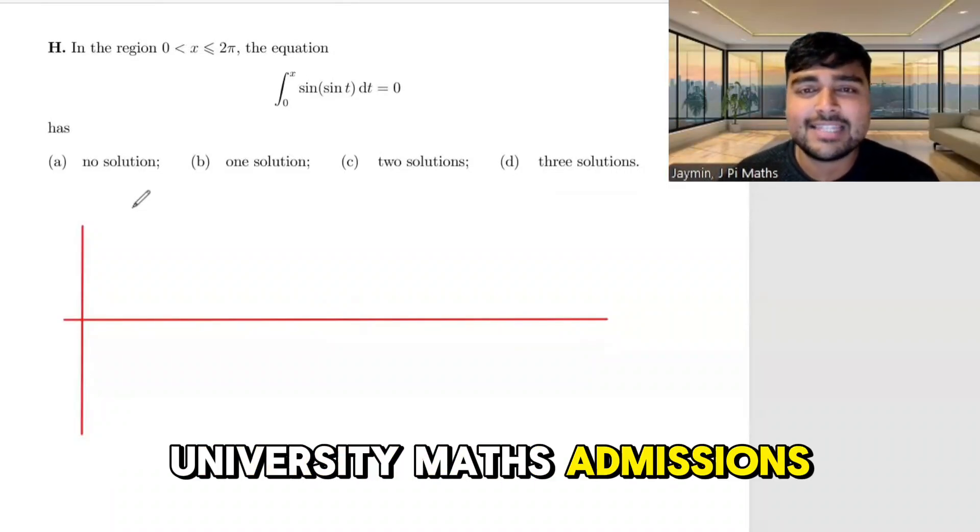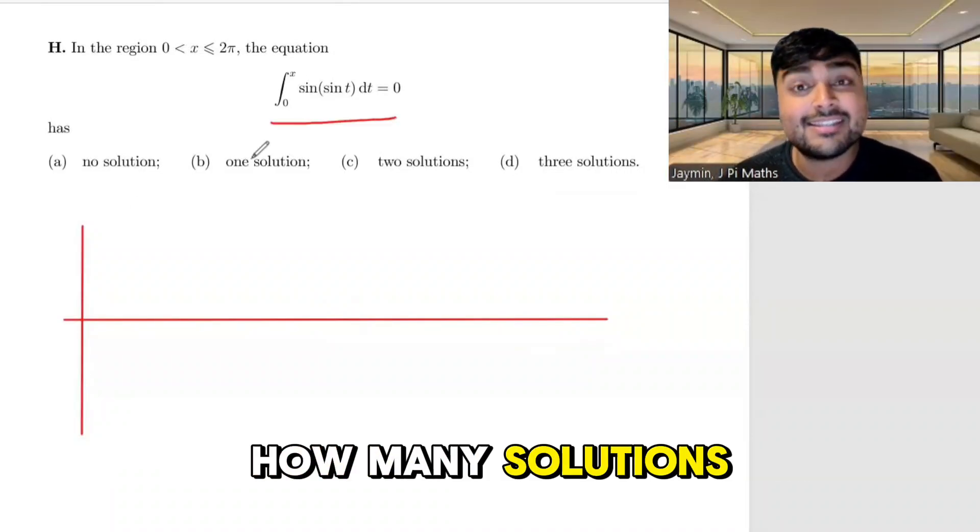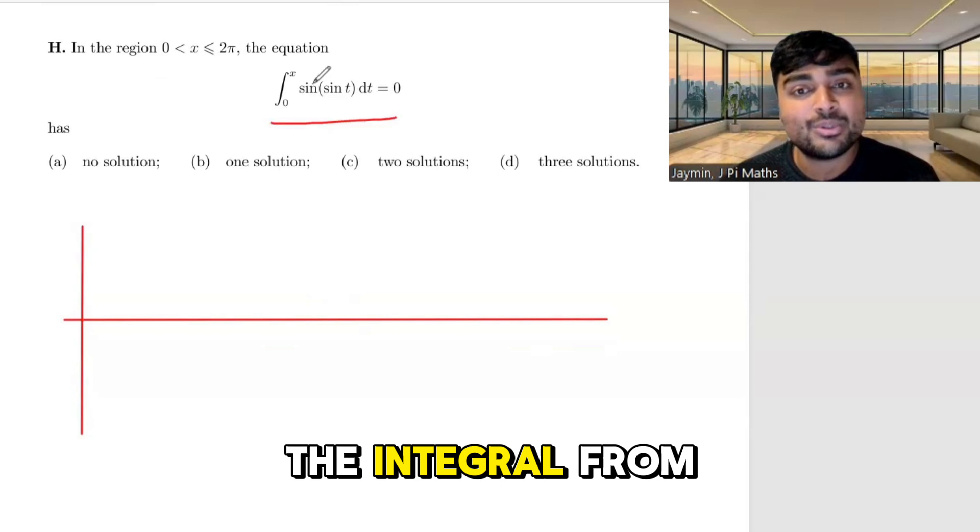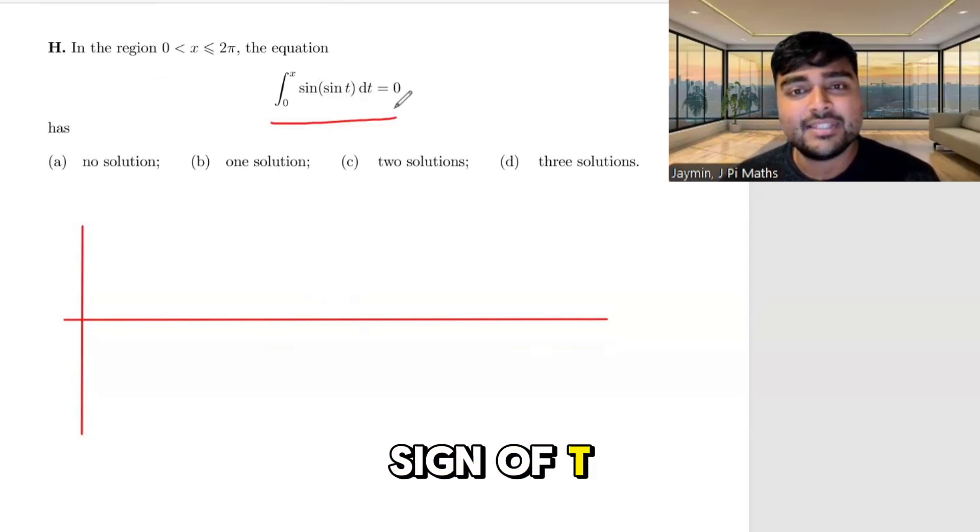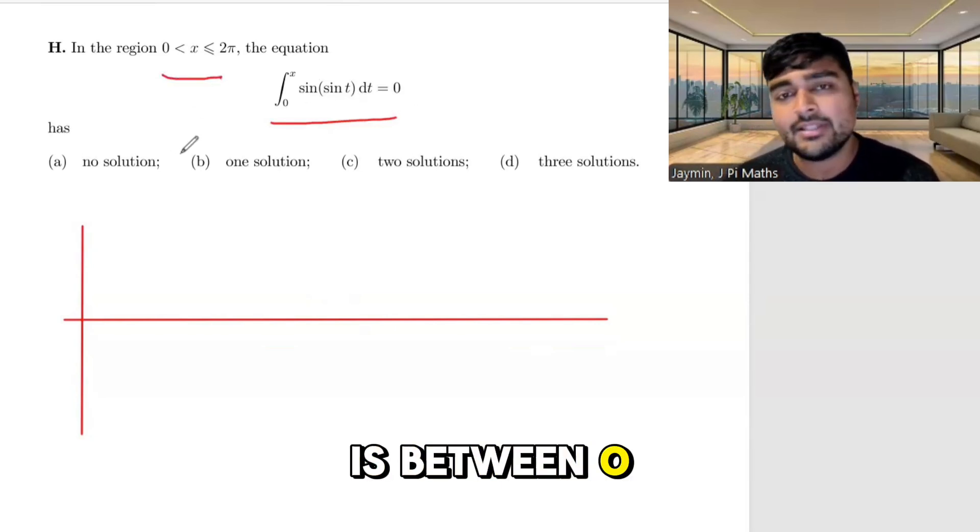Here's a problem from the Oxford University math admissions test. How many solutions does this equation have? The integral from 0 to x of sine of sine of t dt equals 0. And x here is between 0 and 2 pi.